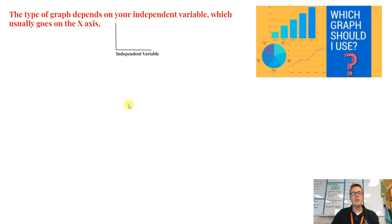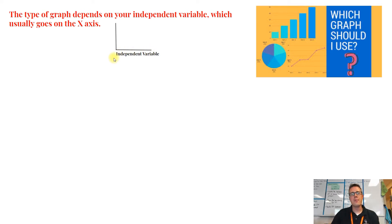The very first step in figuring out what kind of graph you're going to make is thinking about your independent variable. The independent variable will always go on the x-axis of your graph, and it's the thing that decides what kind of graph you're going to get.